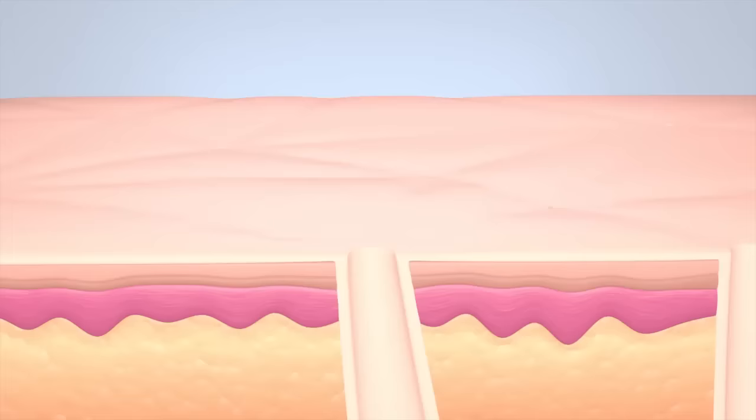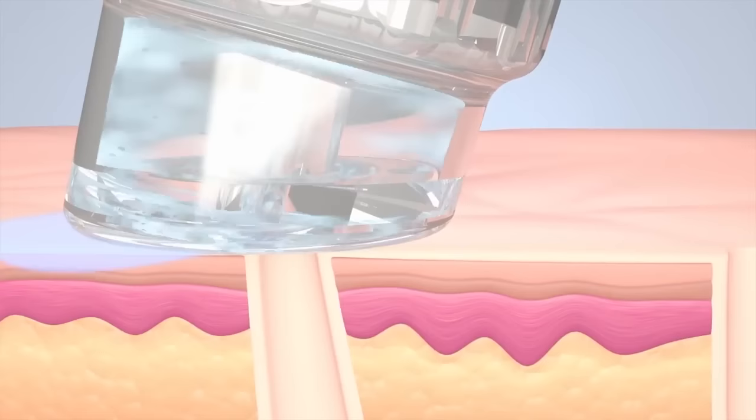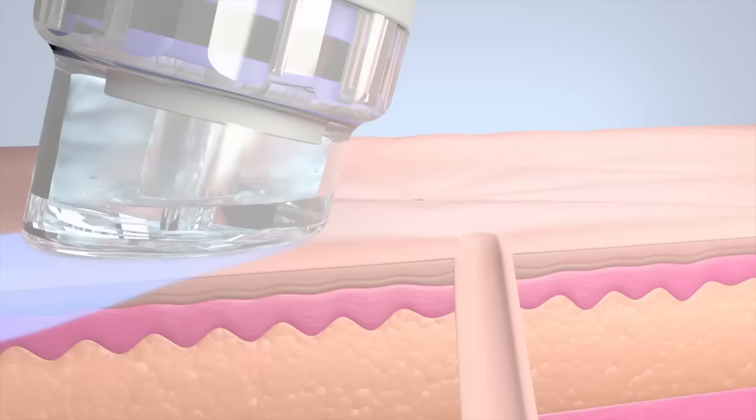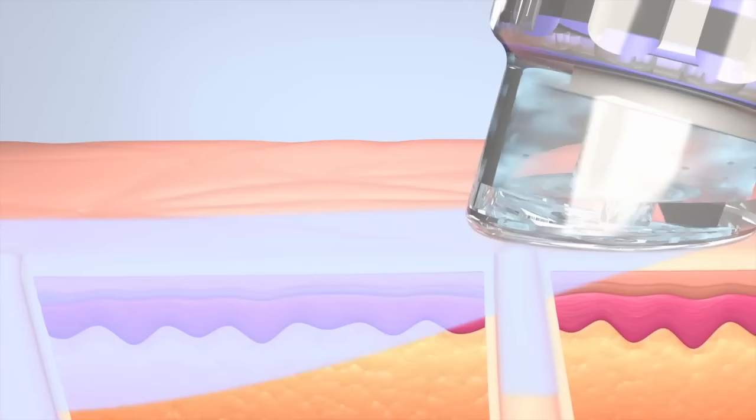The fourth step in the Hydrafacial MD procedure applies Vortex Fusion, delivering a pro-antioxidant formula with potent peptides and hyaluronic acid into the skin. This step provides detoxification, rejuvenation, and restoration for healthy skin structure and function.